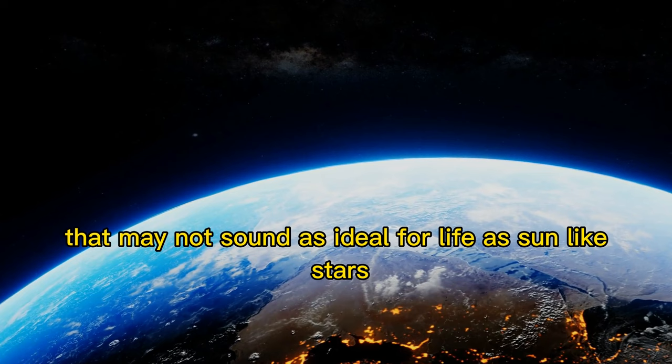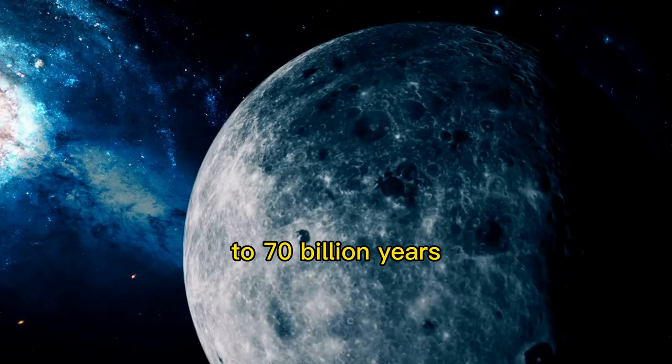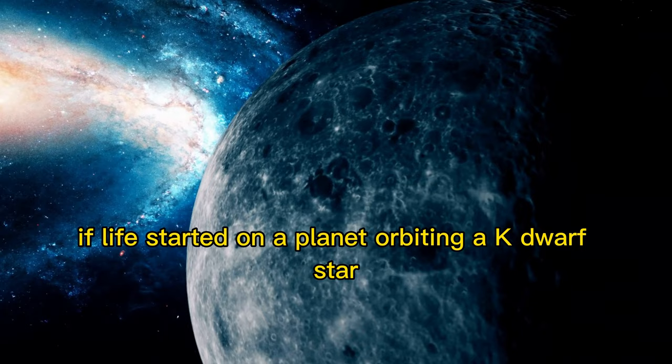That may not sound as ideal for life as Sun-like stars, but they have one big advantage: their lifetimes are anywhere from 20 billion to 70 billion years. If life started on a planet orbiting a K dwarf star, it would have much more time to evolve than life on Earth has so far.